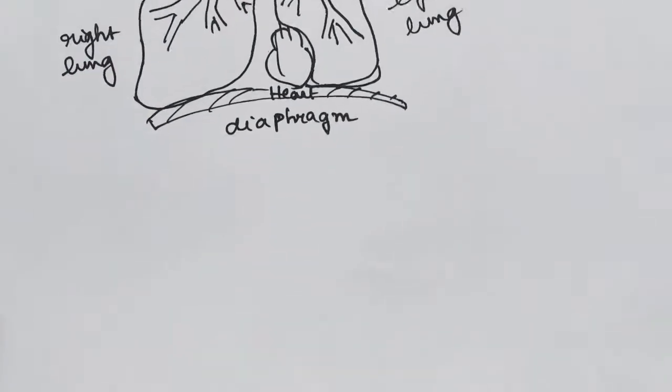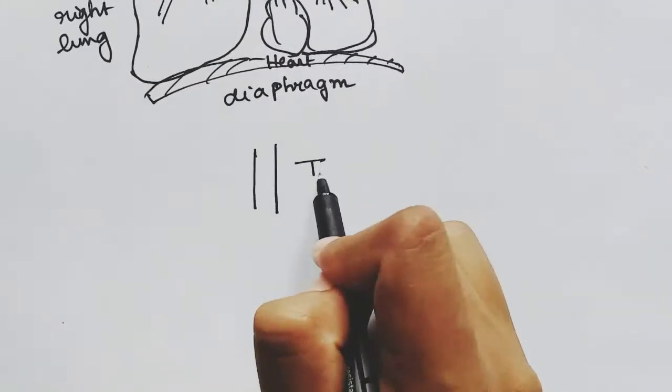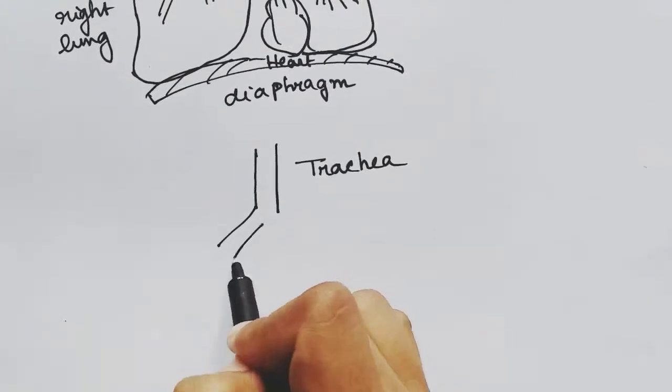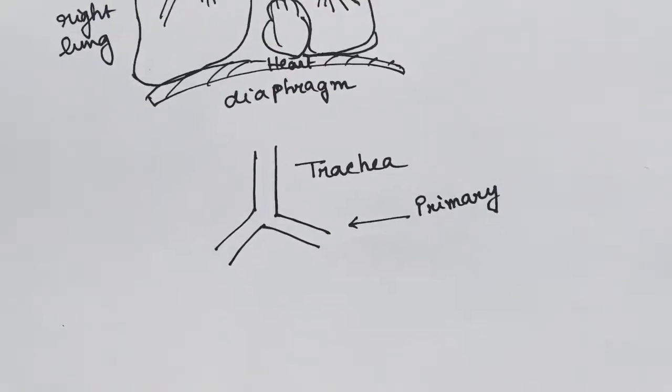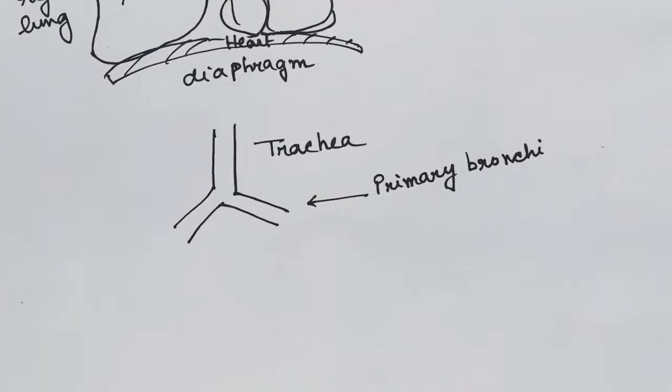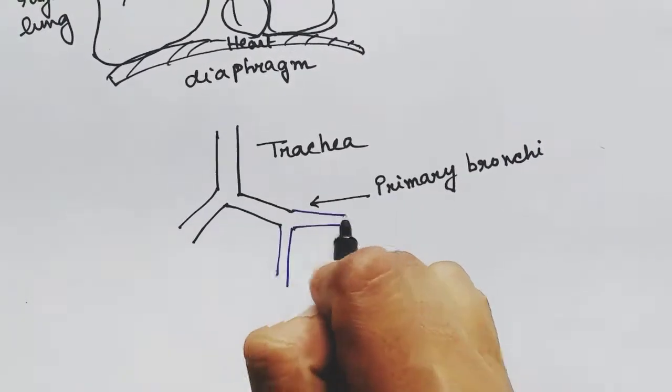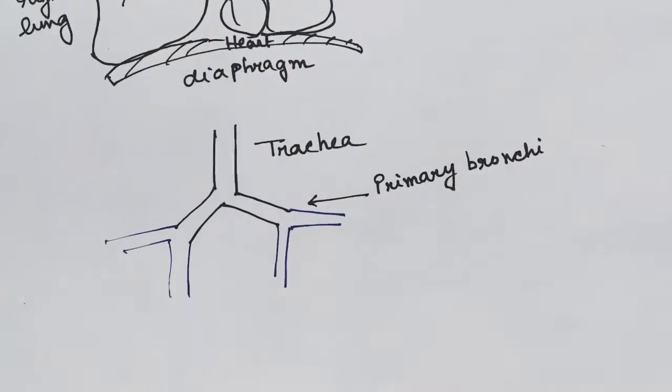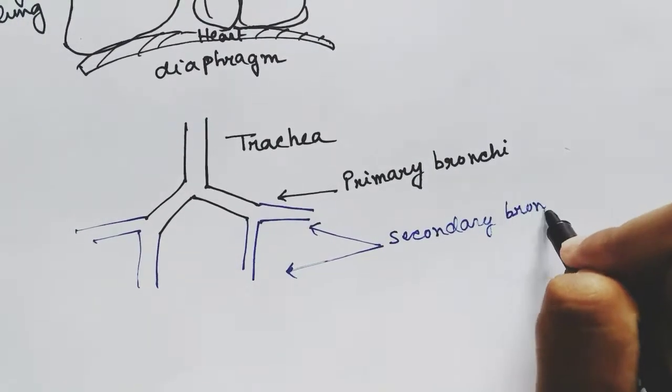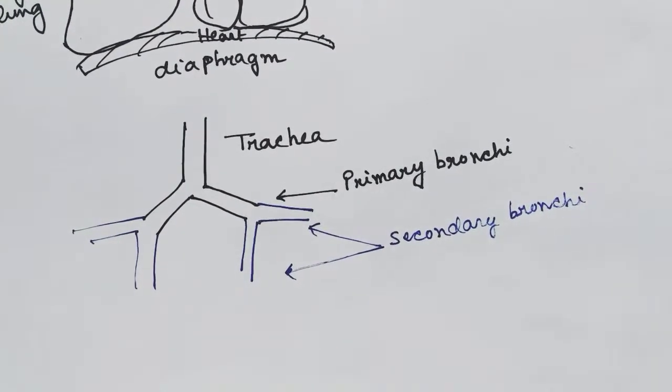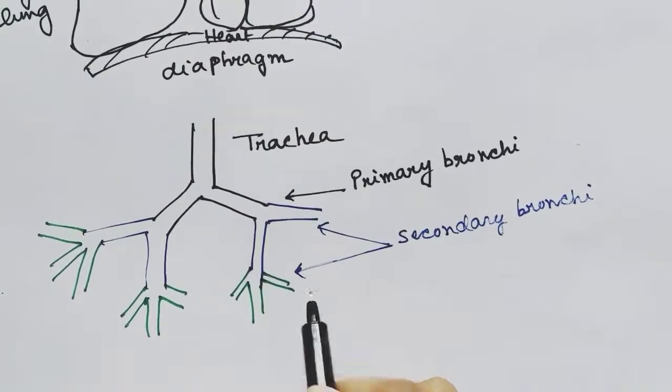This is the trachea which has cartilaginous support. The trachea divides; the first division, these are called primary bronchi. Now the primary bronchi will divide again and form secondary bronchi, and the secondary bronchi will again divide and form the tertiary bronchi.